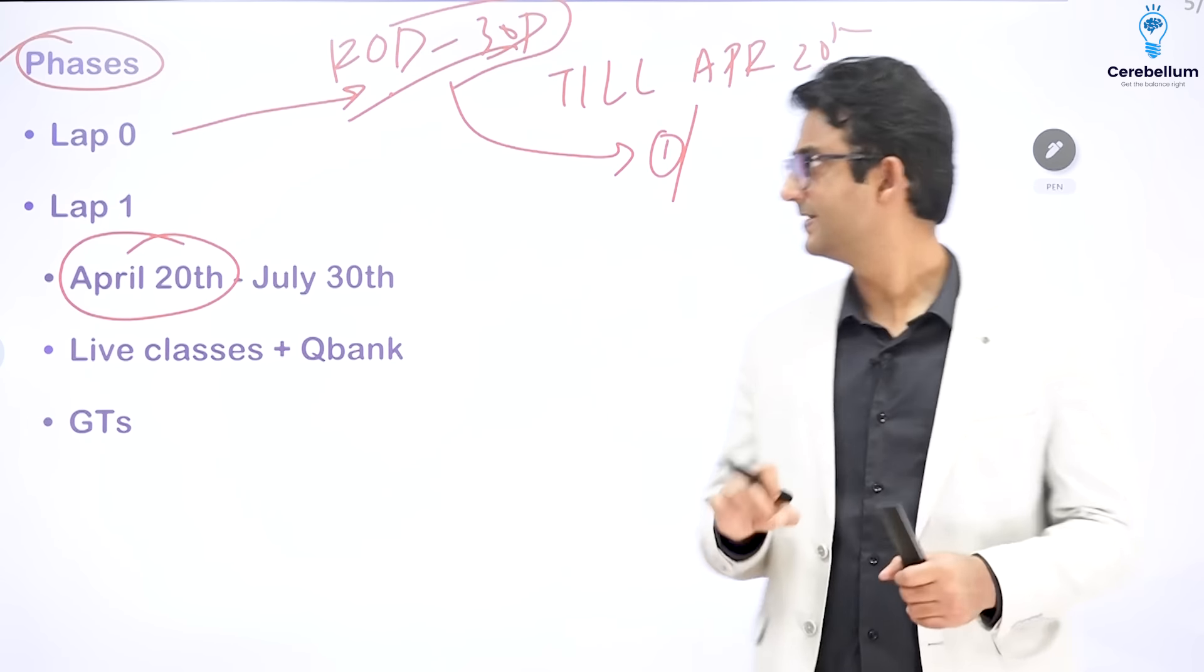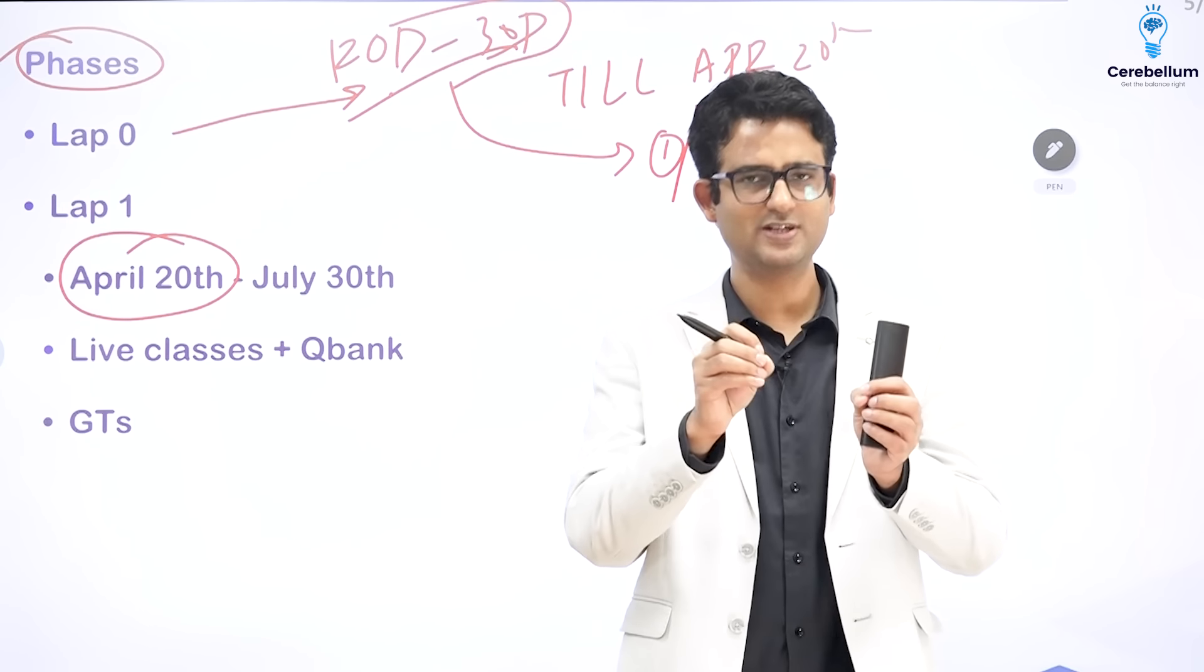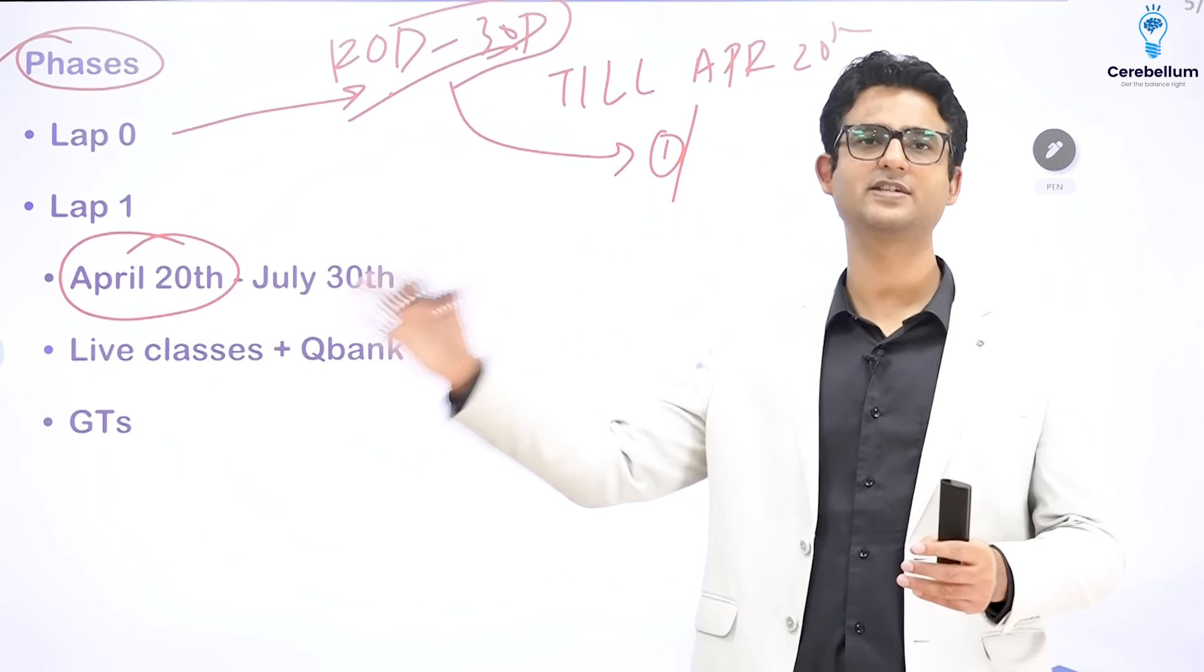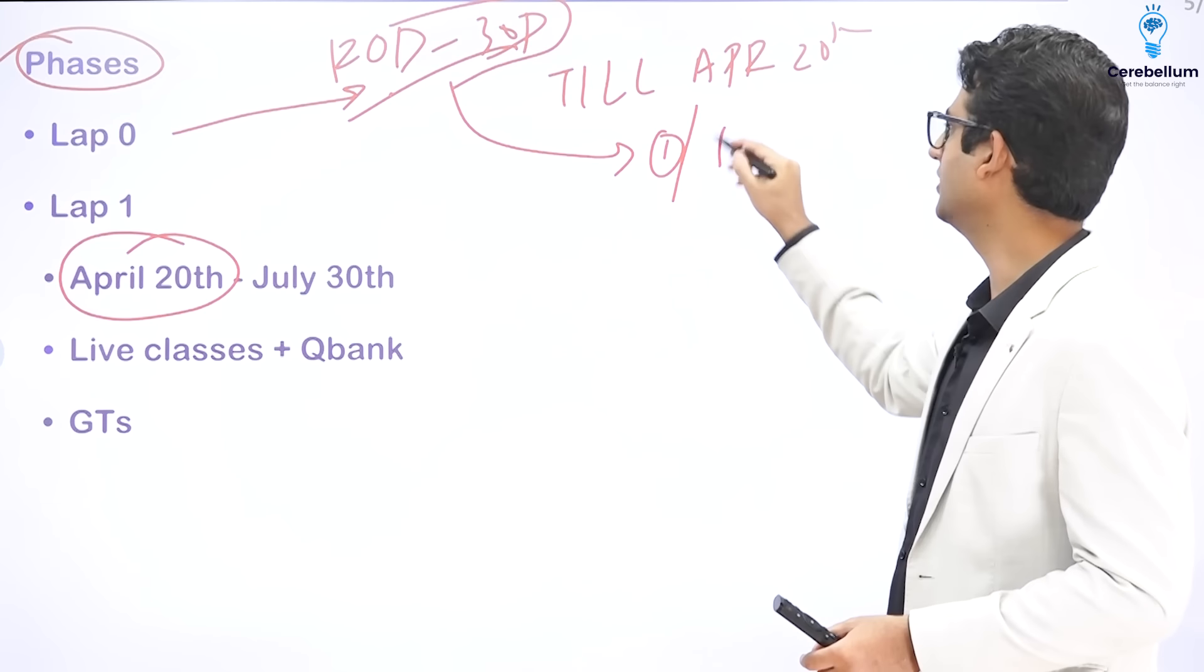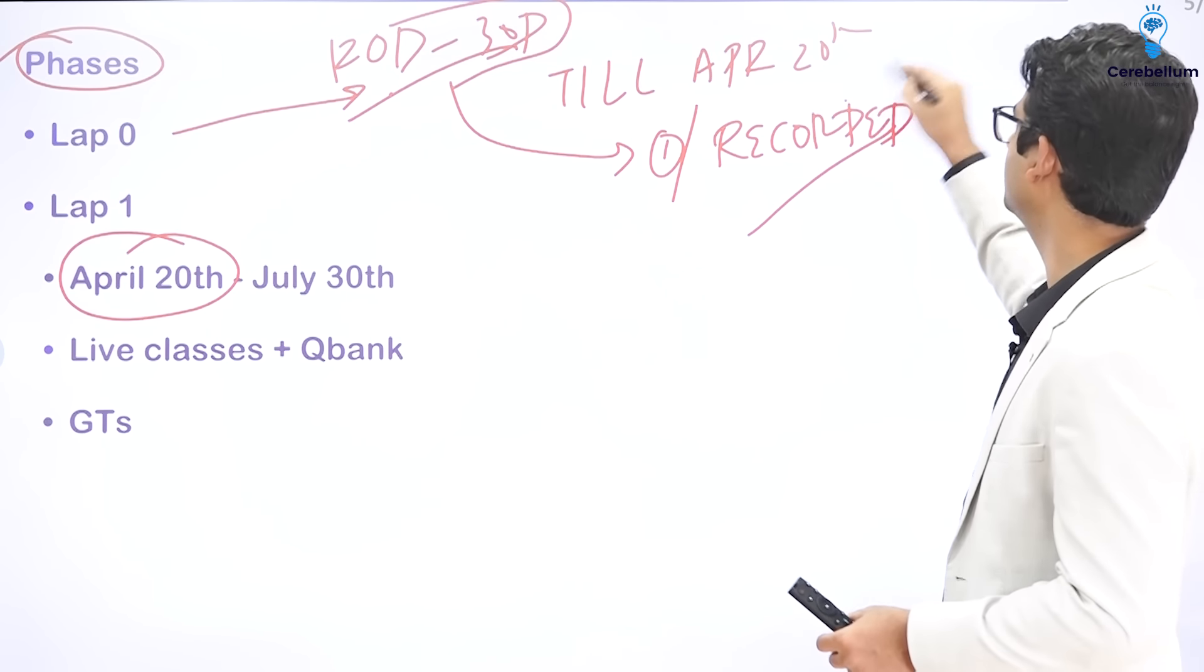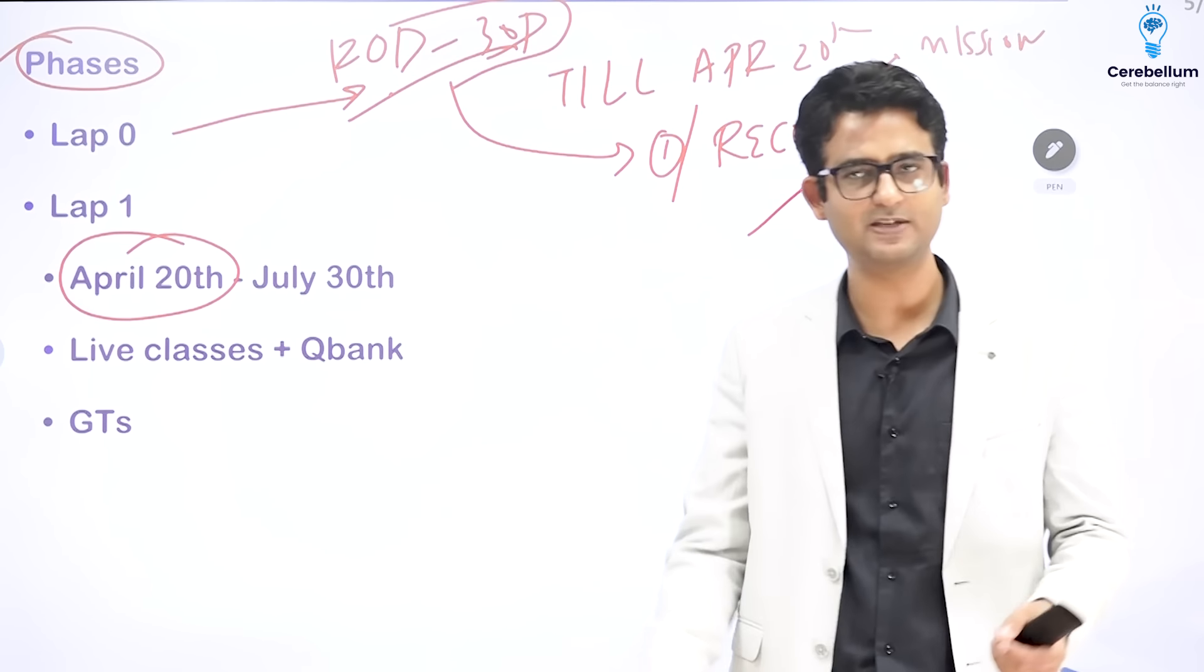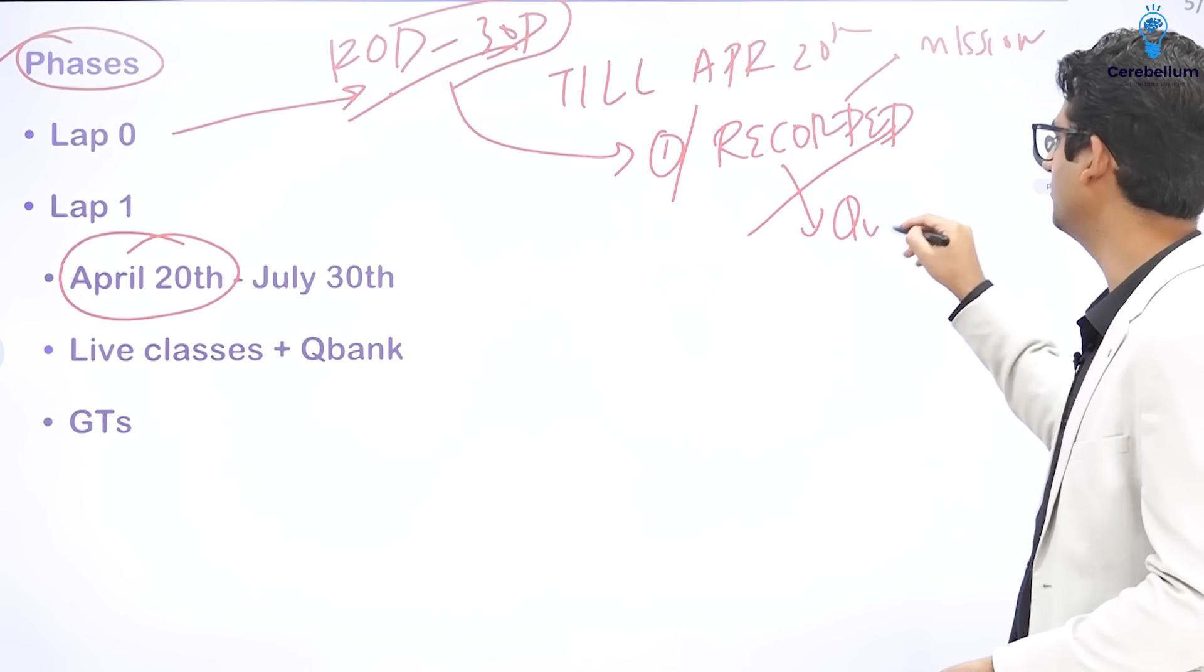Second approach is, say you have a particular preference. You want to start with a particular subject. In that case, what you can do? As I said, all the live lectures are recorded and kept in the app. You can watch a recorded video. Now, that recorded video could be of one of the Mission classes, which means it was taken live at some point of time in the previous batches or the recorded lectures that we have in the app, what we call as quick revision videos.